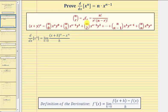Plus the next term is n choose two times x to the power of n minus two times y squared, and so on. Notice as we move to the right, we are losing factors of x and gaining factors of y, and the coefficient is determined by a combination where n choose r equals n factorial divided by r factorial times n minus r factorial.